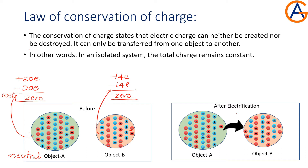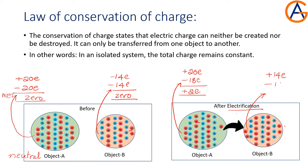Now after the electrification — electrification is a process by which objects become charged — object A is having a total positive of 20E and negative of minus 18E, so object A has become positively charged. Object B is having total positive of 14E and negative of minus 16E, so it is becoming negatively charged with a net charge of minus 2E.